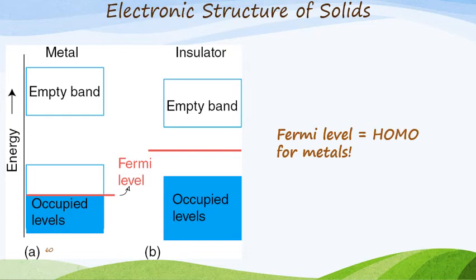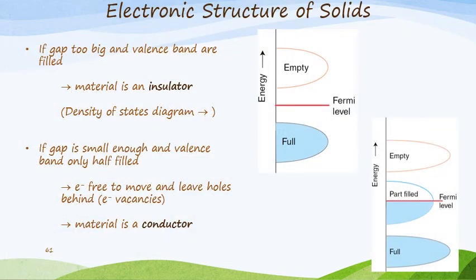For an insulator, you find that the Fermi level is slightly higher up. If the gap is too big and the valence bands are filled, then the material is classified as an insulator. These are called density of states diagrams. In this case we've got a full valence band and the conduction band is empty. This gap is quite big, and therefore the promotion of electrons between the valence band and the conduction band has to overcome a large amount of energy through the Fermi level — hence the material is classified as an insulator.